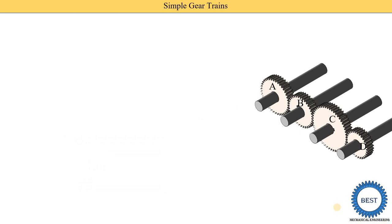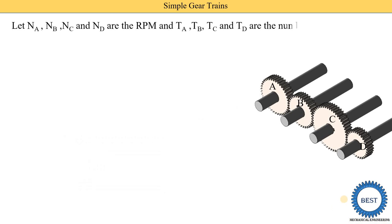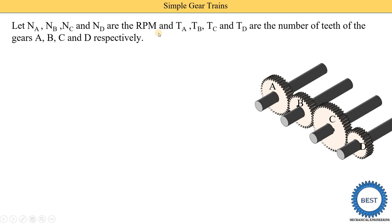To find the velocity ratio, we consider the parameters: Na, Nb, Nc, and Nd are the RPM (revolutions per minute) for gears A, B, C, and D respectively. Ta, Tb, Tc, and Td are the number of teeth on gears A, B, C, and D respectively.